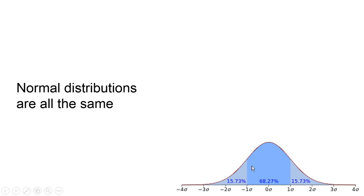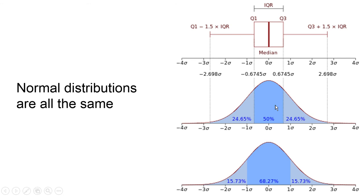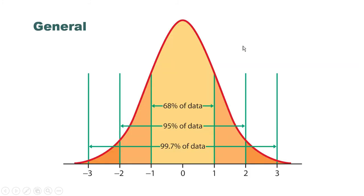The proportions under the curve are always the same if you're measuring in standard deviations. Between plus and minus one standard deviation, you have 68.27% of the area, with 15.73% in each tail. To find the middle 50%, you need z-scores of negative 0.6745 and positive 0.6745. That outer area is where we end the tails on a box plot — at Q1 minus 1.5 IQRs and Q3 plus 1.5 IQRs, where we put dots for outlier data. A normal box plot always has these proportions.